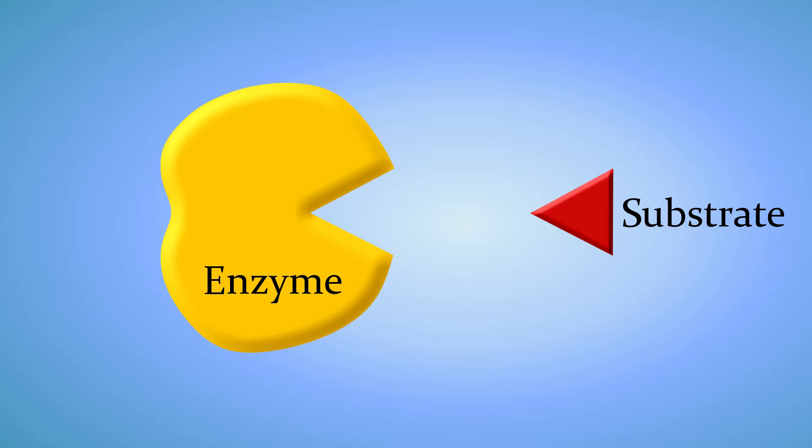Notice that the substrate fits perfectly into the active side of the enzyme, just like a puzzle piece. Each enzyme can only work on specific substrates to do specific chemical reactions. So we say that enzymes are specific.